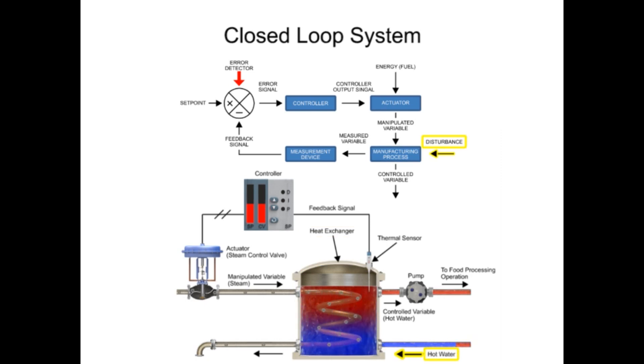Disturbance is defined as a change in the manufacturing process resulting in a change in the control variable. Disturbances occur when the water temperature suddenly changes or stops flowing.